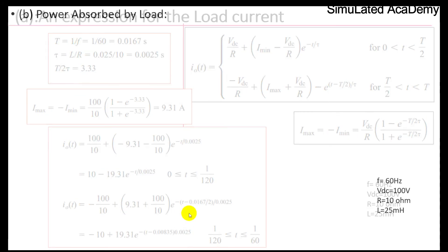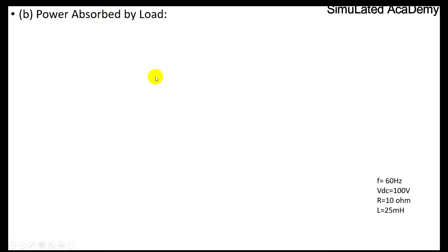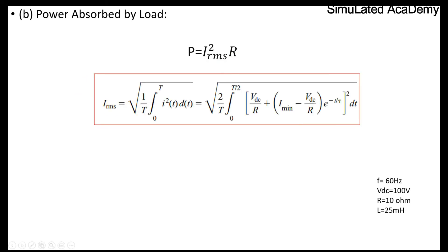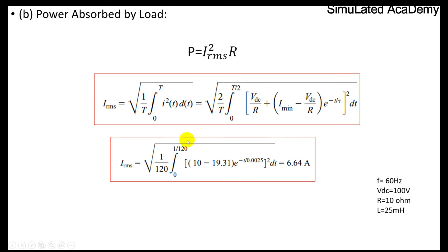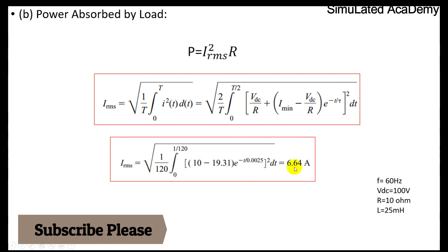The second part is to find the power absorbed by the load. Only the resistive part absorbs power, so P = I_RMS² · R. I_RMS is calculated using: I_RMS = √(2/T · ∫₀^(T/2) [VDC/R + (I_min − VDC/R)·e^(−t/τ)]² dt). With 2/T = 120 and substituting values (VDC = 100, R = 10, I_min = −9.31), I_RMS comes out to be 6.64 A.